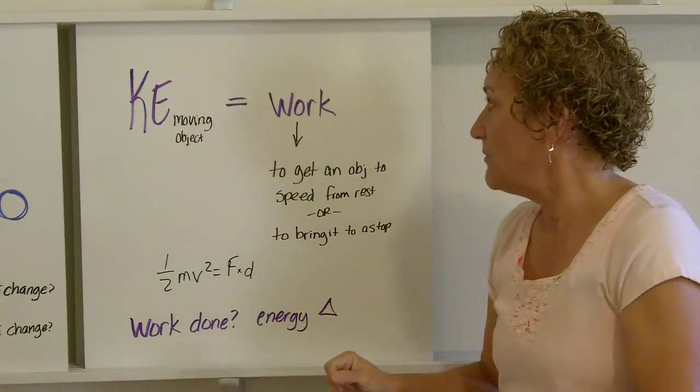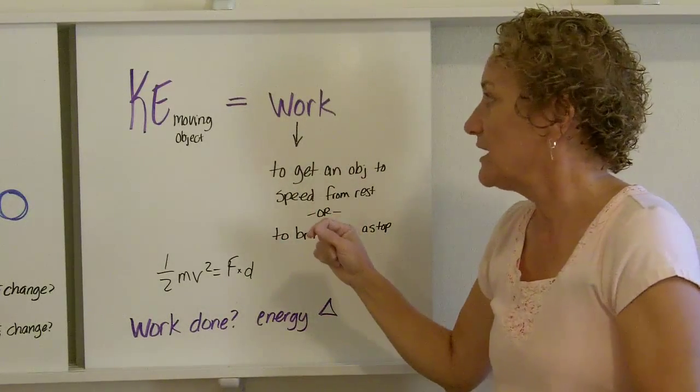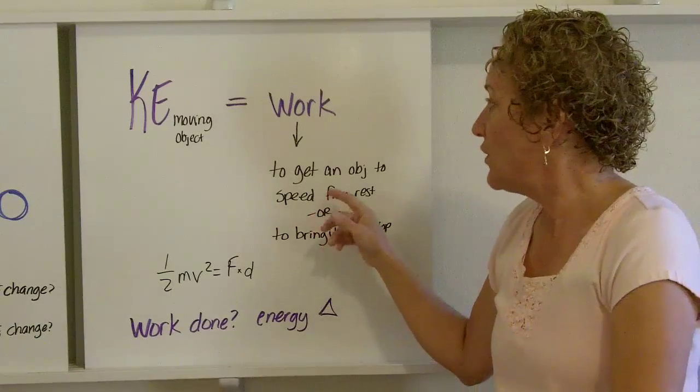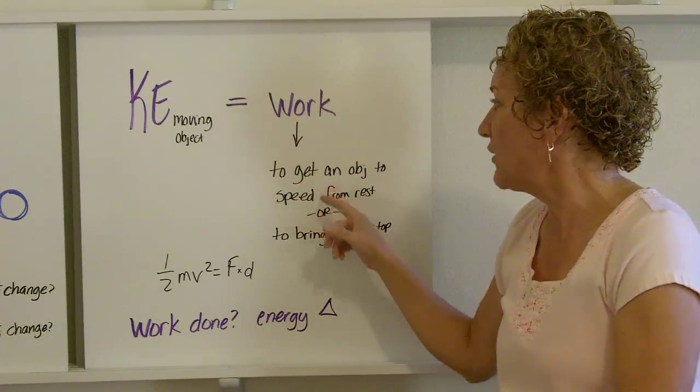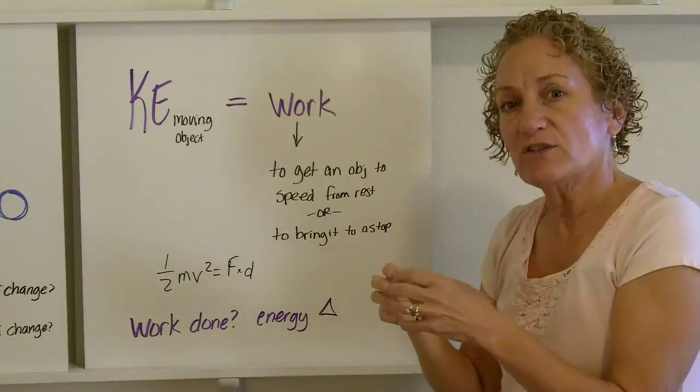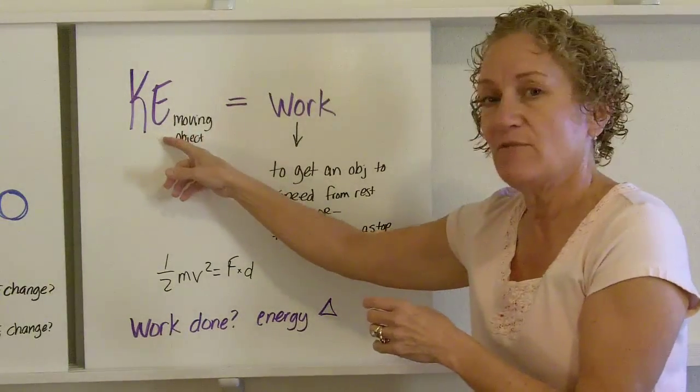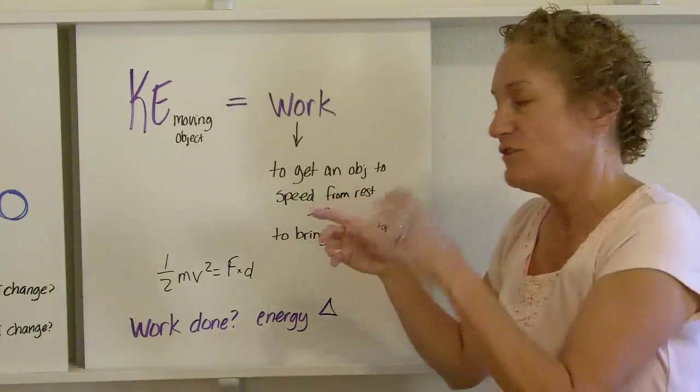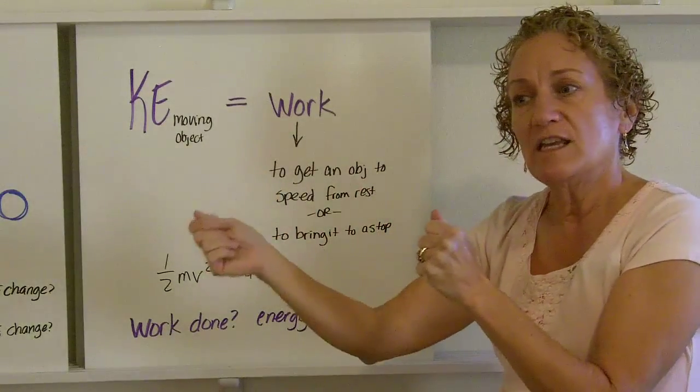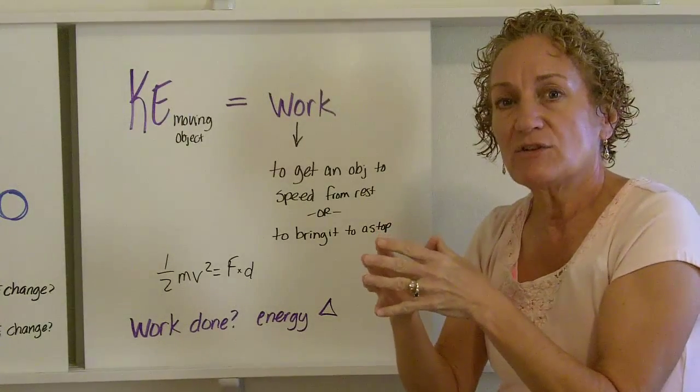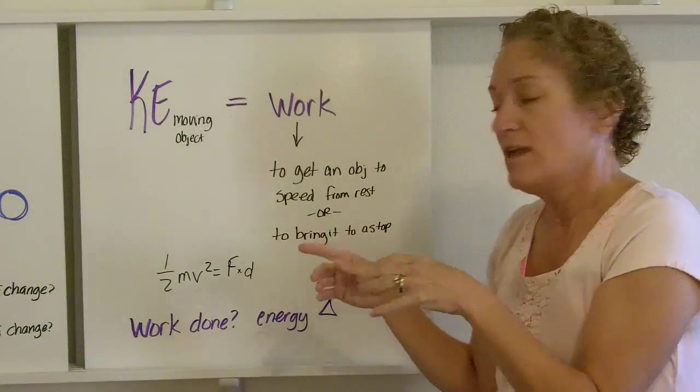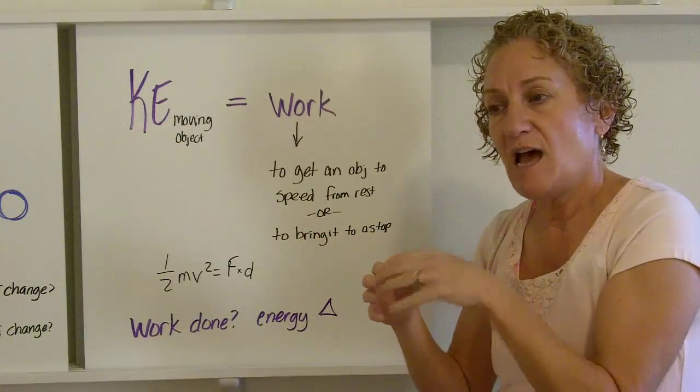Kinetic energy of a moving object is equal to the work. It's equal to work. So what kind of work are we talking about? We're talking about the work necessary to get an object to a certain speed from rest, because this is one-half mv squared. So to get an object, you've got something at rest, you're going to get it up to 45 kilometers per hour. That's going to take a certain amount of work, or the amount of work needed to bring it to a stop.